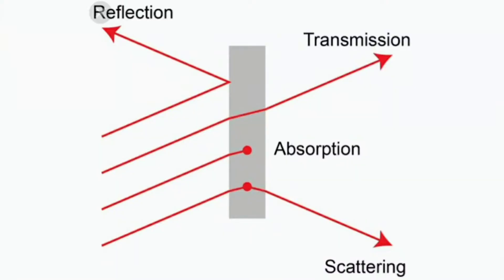When light rays pass through a transparent material, they reflect, transmit, absorb, or scatter.